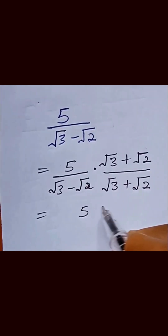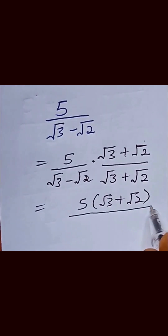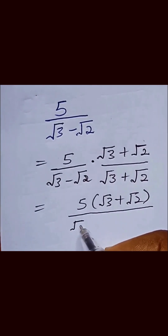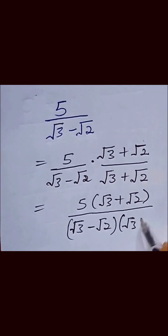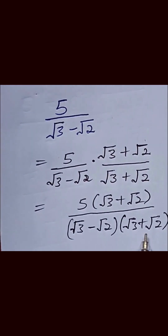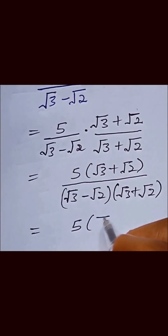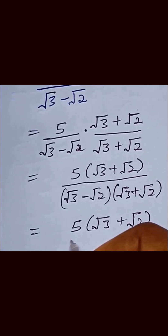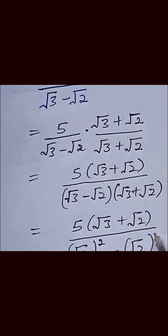So we have 5 into bracket square root of 3 plus square root of 2, over square root of 3 minus square root of 2 times square root of 3 plus square root of 2. So as we can see, this appears in a form of difference of two squares, which means we can express the denominator as equal to 5 into bracket square root of 3 plus square root of 2, over square root of 3 raised to the power of 2 minus square root of 2 raised to the power of 2.